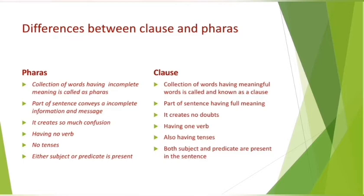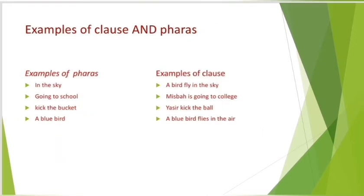This is how we differentiate clauses and phrases. Now let's see some examples. Example of a phrase: 'in the sky.' Here 'sky' relates to a subject but the predicate is missing, so it is an example of a phrase. Example of a clause: 'a bird flies in the sky.' Here 'a bird' is the subject and 'in the sky' gives information about the subject, acting as the predicate.